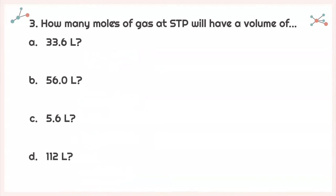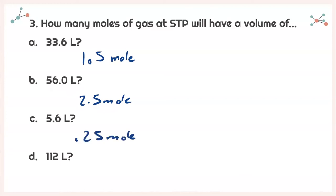Next, still not using a calculator, we need to find how many moles of gas at standard temperature and pressure have a given volume. For A, 33.6 liters: knowing 1 mole is 22.4 liters, we find the relationship between 33.6 and 22.4, which is 1.5, so that's 1.5 moles. For B, 56 liters: that's 2.5 times as much, so 2.5 moles. For C, 5.6 liters: that's 10 times less than 56.0 liters, so divide 2.5 by 10 to get 0.25 moles.